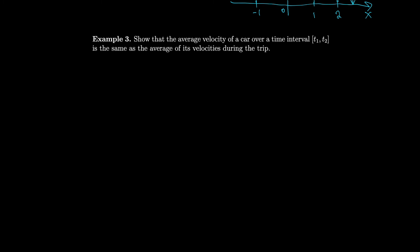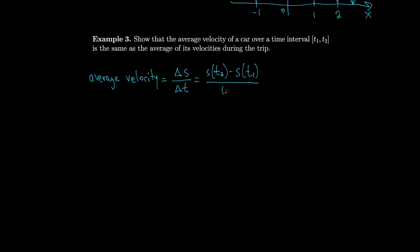Let's show that the average velocity of a car over a time interval [t1, t2] is the same as the average of its velocities. If it wasn't, that would be pretty bad, so we should definitely be able to show this. The average velocity equals the change in displacement over time. If s(t) is displacement, then this is delta s over delta t — change of displacement over change in time — which is the same as s(t2) minus s(t1) divided by t2 minus t1. This is the average velocity.